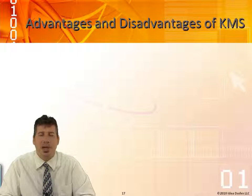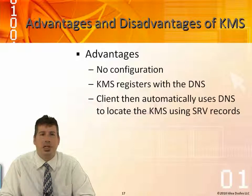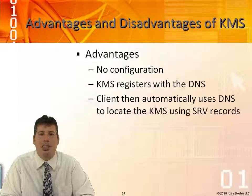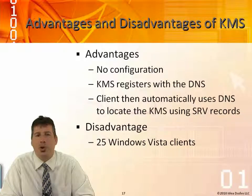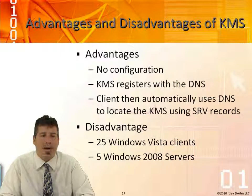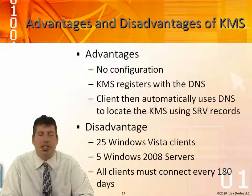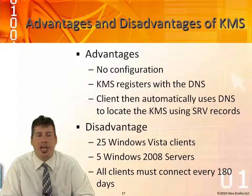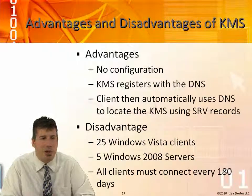The advantage of KMS is that there's essentially no client configuration needed — KMS registers with DNS, and the client automatically uses DNS to locate the KMS via the SRV record, which is automatically created when you activate the KMS. The disadvantages are that you need at least 25 Windows Vista or Windows 7 clients, or five Windows Server 2008 servers. All clients must connect every 180 days; if they don't, the client will be put into a lower version of Windows, losing access to shares and installed programs until it activates with the KMS again.